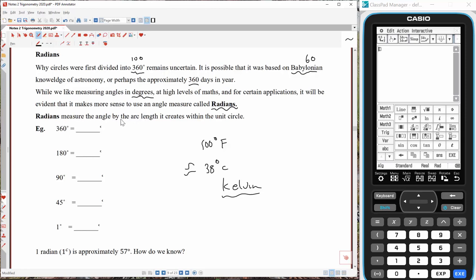Radians measure the angle by the arc length that it creates within the unit circle. And 360 degrees will create an arc length that is once around the unit circle. So what would once around the unit circle be? Well, the unit circle has radius 1. C equals 2π times the radius, C equals 2π. The circumference of the unit circle is 2π. So the arc length made is going to be 2π for 360 degrees.